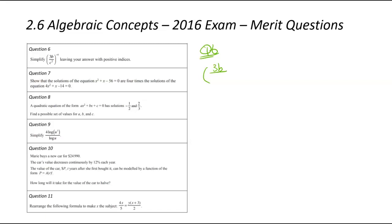So 3b divided by c squared to the power of negative four. First thing I'm going to be doing is expanding the bracket to make sure that power is impacting both of those. That's 3b to the power of negative four divided by c squared to the power of negative four.